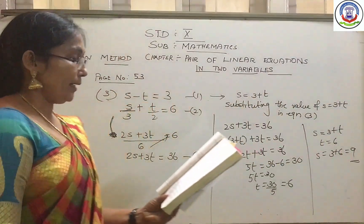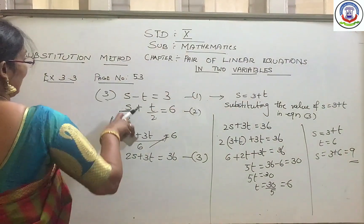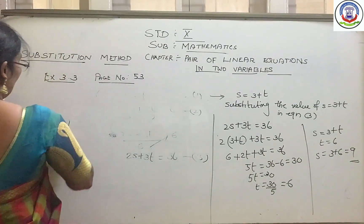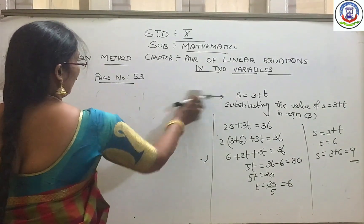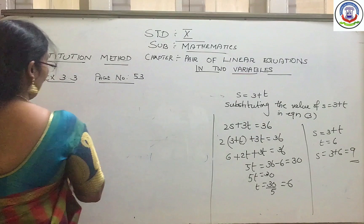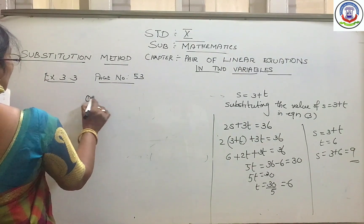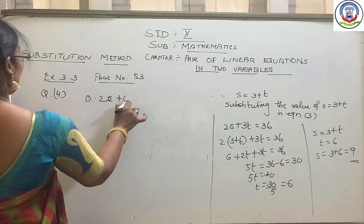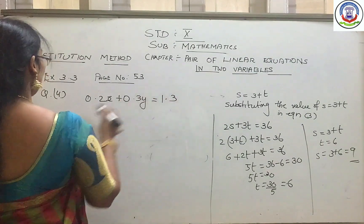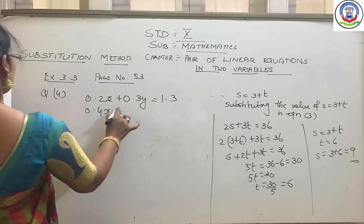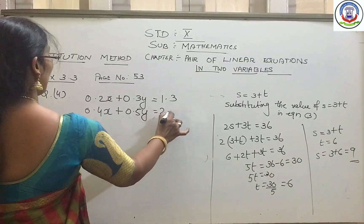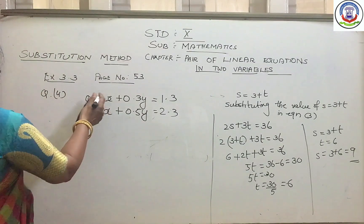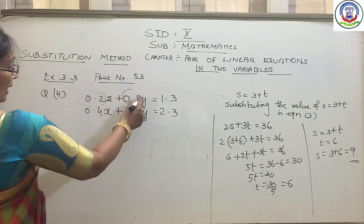The next question is exercise question number 4. It is also a straightforward sum, but you will have some difficulty because decimals are given as coefficients. The question is: 0.2x plus 0.3y equal to 1.3, and 0.4x plus 0.5y equal to 2.3.